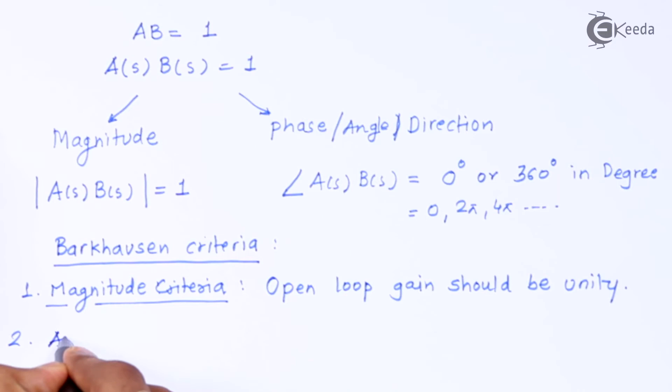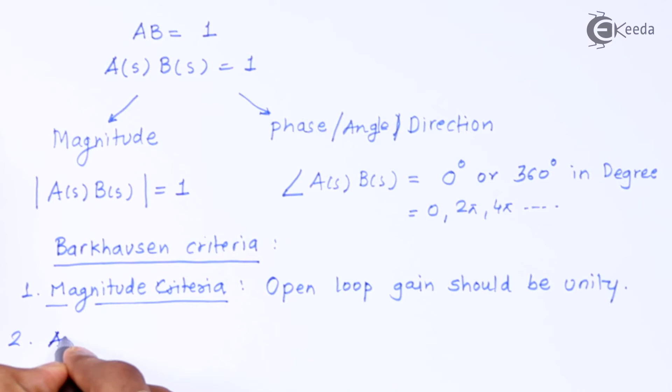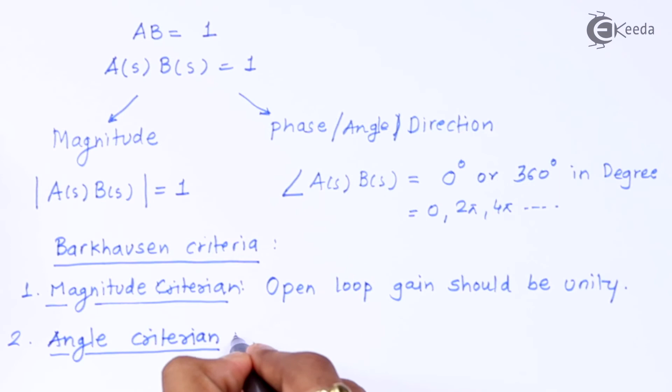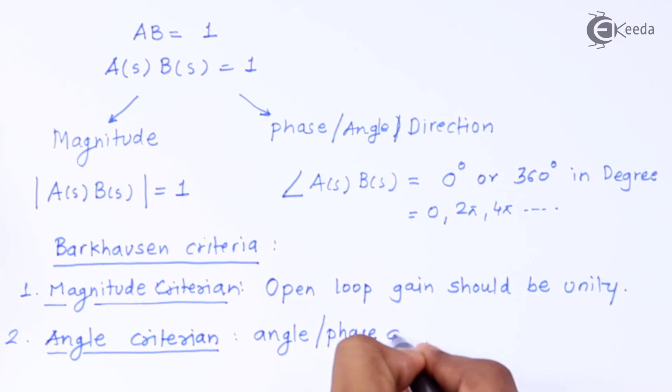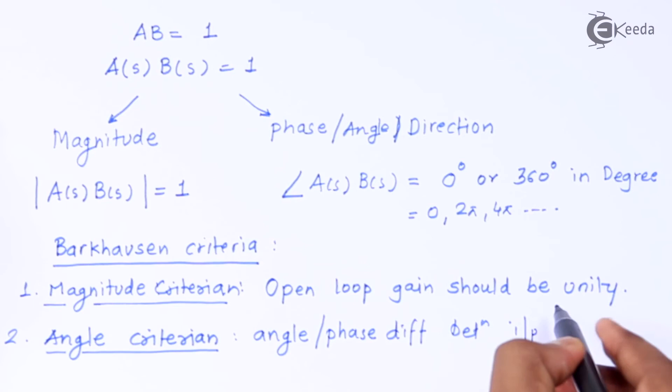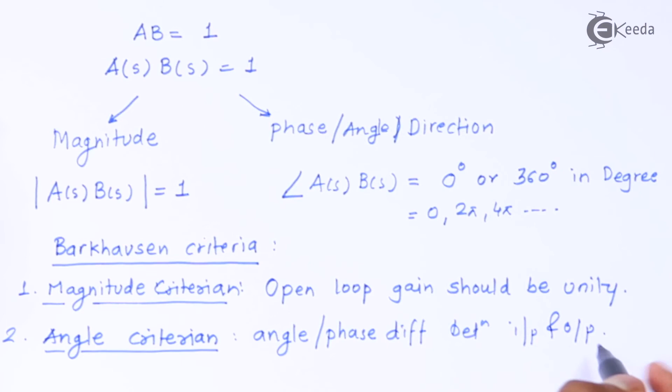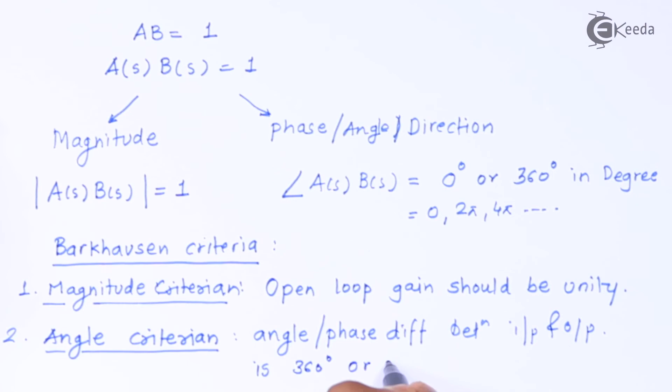Then second criteria is saying that angle criteria I am specifying. And that is nothing but angle or phase difference between input side and output side is 360 degree or 0 degree. This is how the Barkhausen criteria is sliced into two parts. One is magnitude criteria and one is angle criteria.